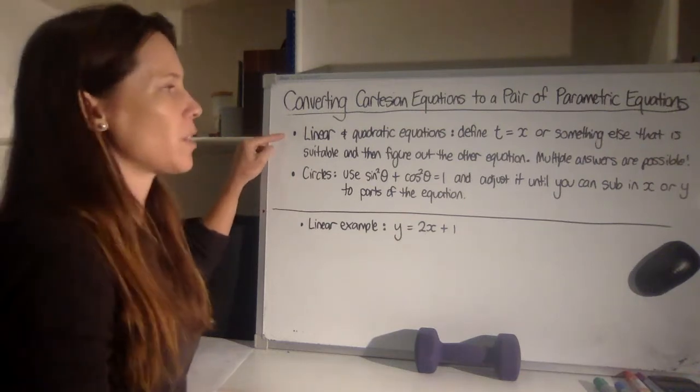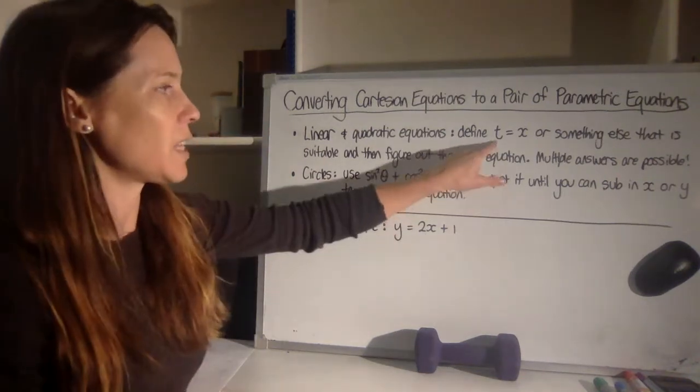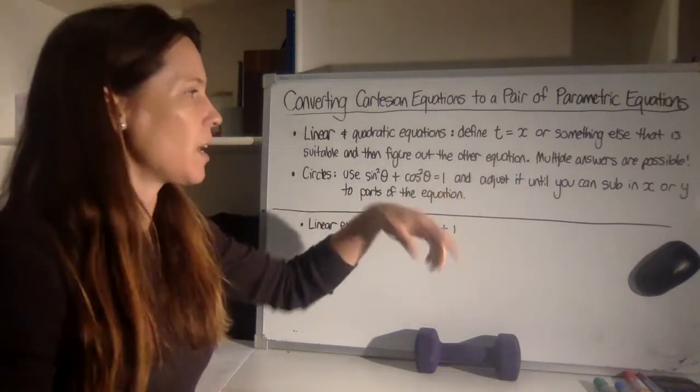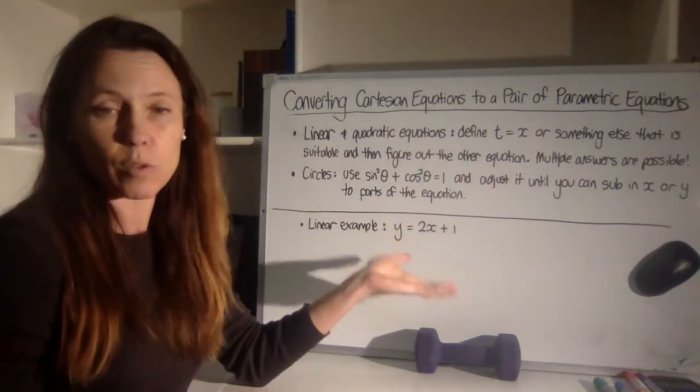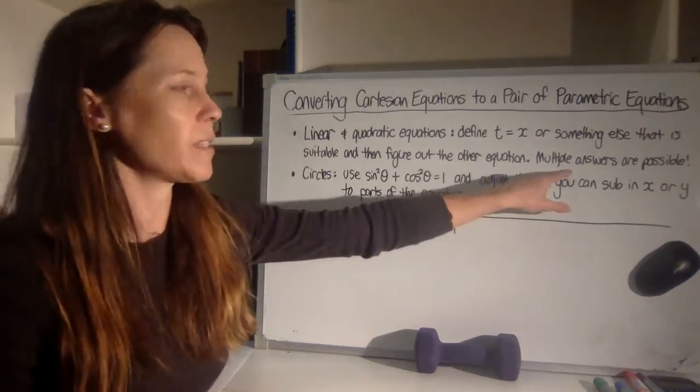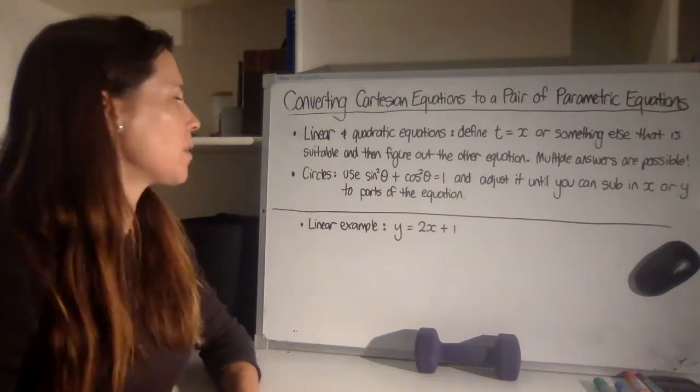The linear and quadratic equations, the easiest way to do it is just to define t as being x, and then you can go ahead and figure out what the other equation is. Now if you want to use something else, you can. There's multiple answers that are possible and I'll show you how to do that in a moment.